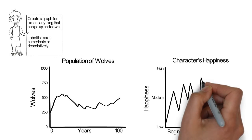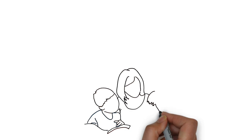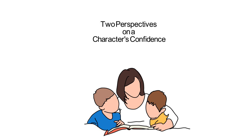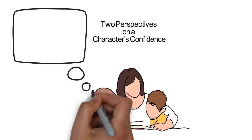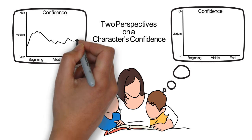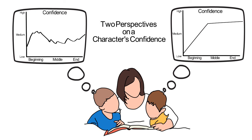After creating graphs over time for a particular system, use them as a basis for conversation. For example, seeing how the same behavior can be perceived in different ways. Here are graphs showing how two people perceive the same literary character's level of confidence. Now they can talk about why they see the situation differently, creating a possibility for one or both parties to refine their own thinking.